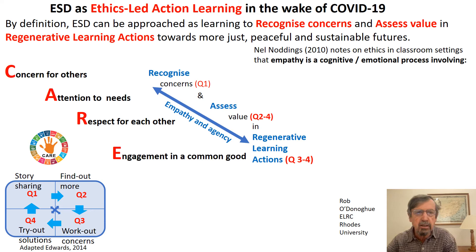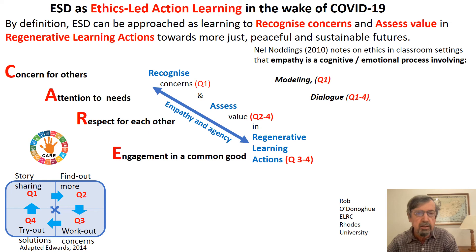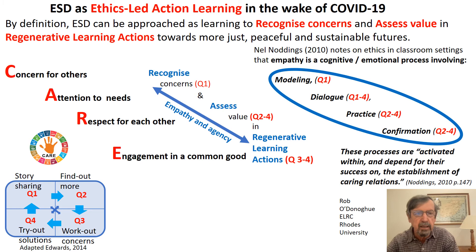So we went to Nell Noddings, who notes that ethics in classroom settings — that empathy is both cognitive and emotional — involving modeling, which opens up in a conventional classroom teaching situation; dialogue, which happens throughout the learning process; practice, which is particularly centered on action learning in the handprint approach; and confirmational affirmation, which good teachers do, and knowledge acquisition actually achieves. So what we had now was a framework for an ethics-led approach. Noddings emphasizes that these processes are activated within and depend for their success on the establishment of caring relations. So the handprint care approach was developed and elaborated.